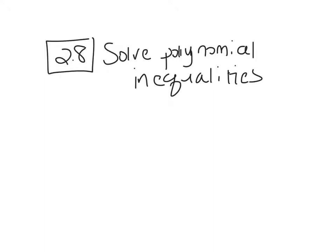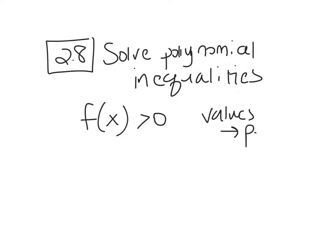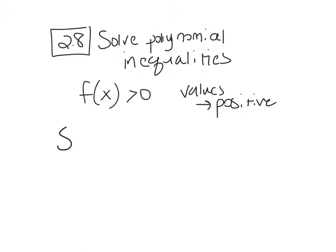We've actually done this a little bit. We did solving quadratic inequalities in Chapter P, but the way they want you to do this here is you're not allowed to use your calculator. So if we're solving a polynomial function that is greater than 0, you're trying to find the values that make the polynomial positive. And if it's negative, you want to find the values that make it negative. So what they want you to do is make a sign chart.